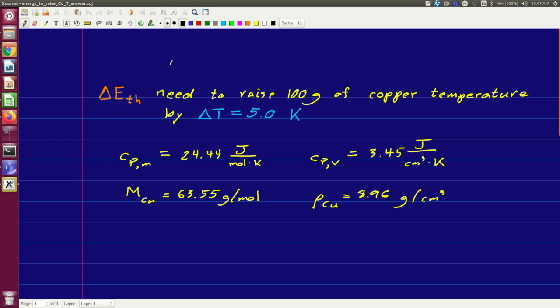At the end of the last part of this lecture, I asked you to find the energy needed to raise 100 grams of copper by a temperature change of 5 Kelvin. You will have had to do a quick calculation to do this, and as I say, it's largely a unit analysis issue.